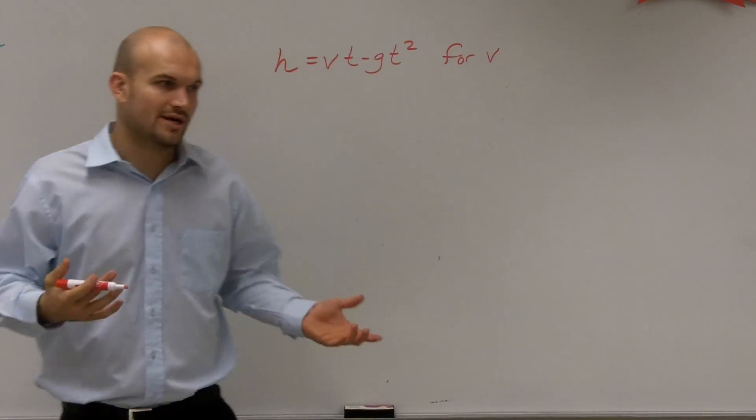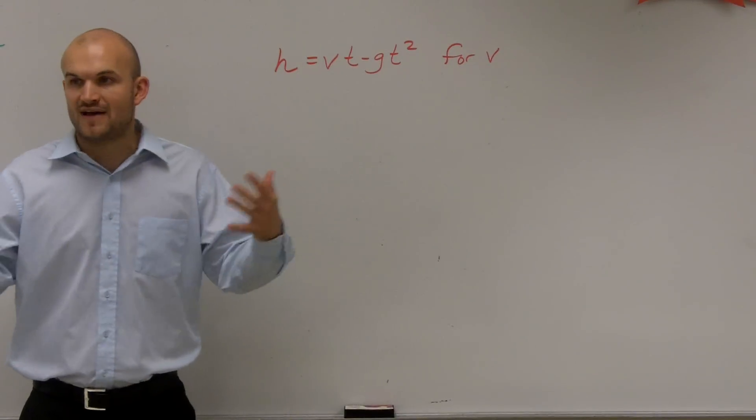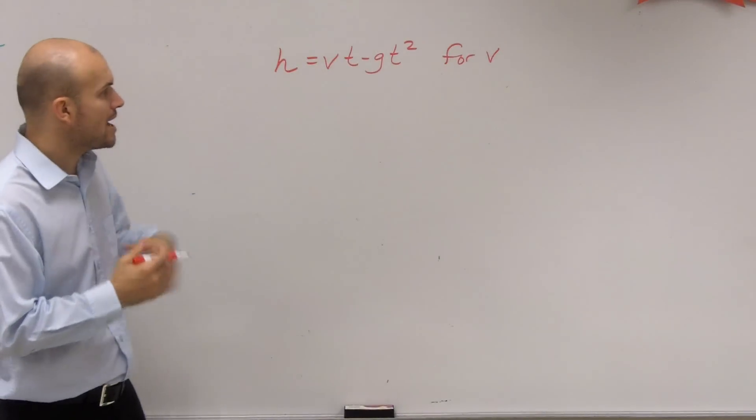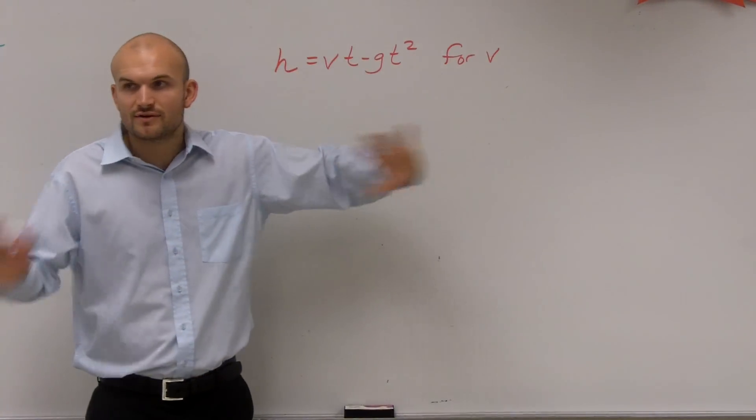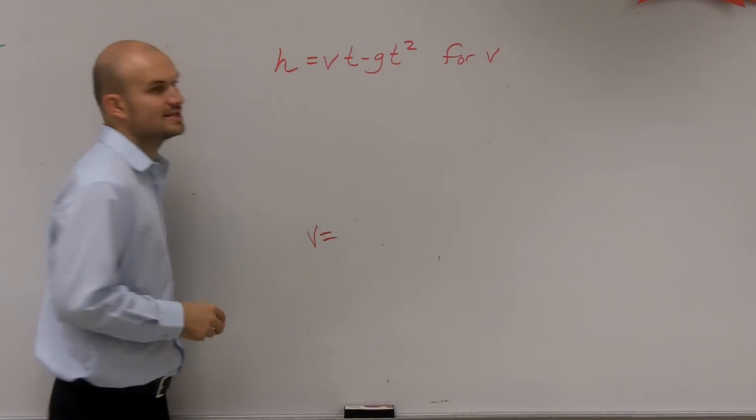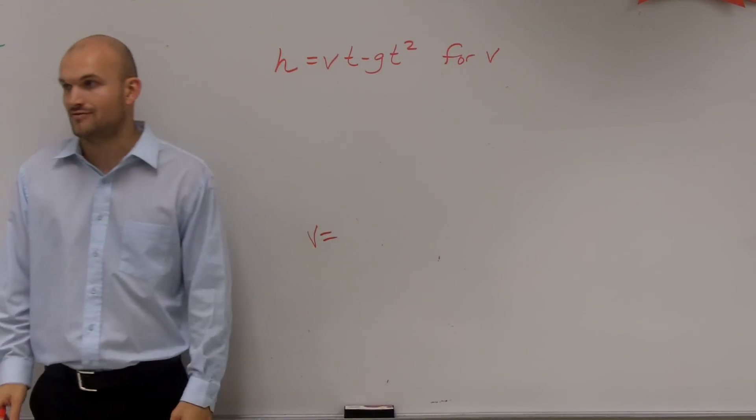The difficult thing about literal equations is we're not going to get an absolute value that we can see for our problem. But when we want to solve, just remember, we're trying to solve for v. Our idea is to isolate the variable to get it by itself.